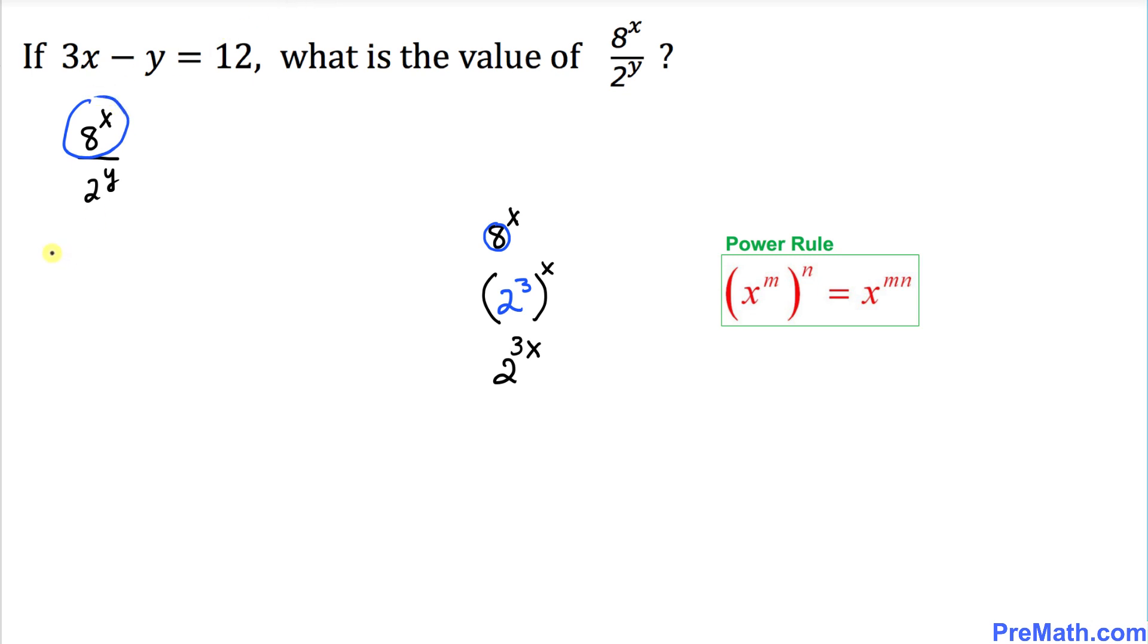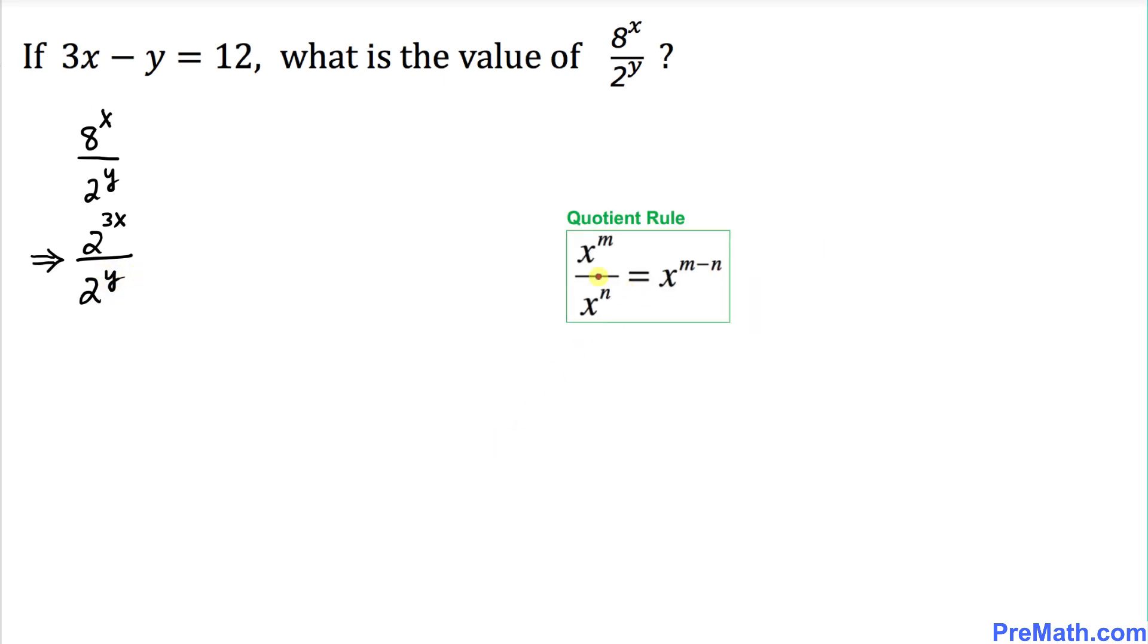We're going to leave the denominator as it is, 2 power y. Now we are going to use this quotient rule. It states x power m divided by x power n equals x power m minus n.